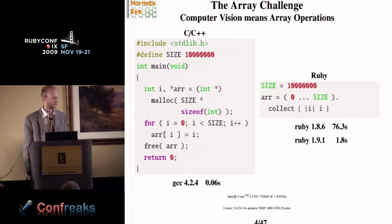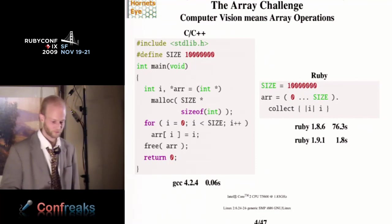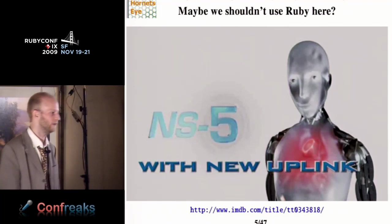Computer vision means array operations. A lot of it is done using array operations. And as you can see here, even the recent version of the Ruby virtual machine is still 30 times slower on this particular machine than the recent version of GCC. This is an example of an operation creating an index array with 10 million elements. So you may think maybe using Ruby is not such a good idea. I don't know who of you have seen the movie, but if you've seen the movie iRobot, you know what that red light means.